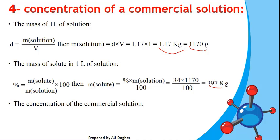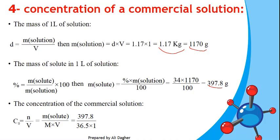Now we can calculate the concentration C0 of the commercial solution. C0 equals n over V — number of moles of solute over volume of solution. Since number of moles equals mass over molar mass, we replace n to get: C0 = mass of solute / (molar mass × volume). Mass of solute is 397.8 g, molar mass is 36.5 g/mol, and volume is 1 liter — the same volume taken in step one.